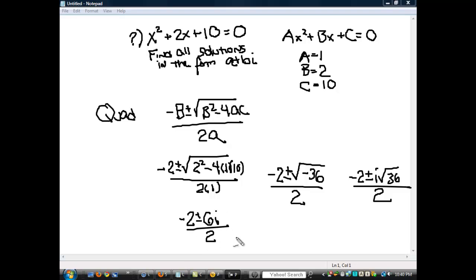We can simplify right here. Dividing everything by 2, we get negative 1 plus or minus 3i. So the two solutions are negative 1 plus 3i and negative 1 minus 3i. I hope that helps.